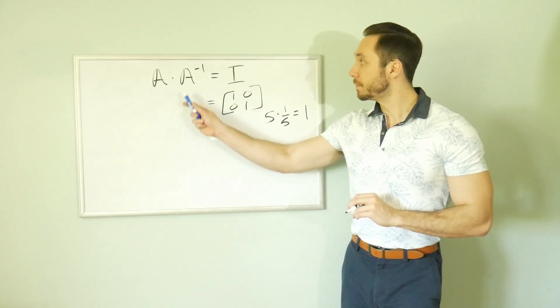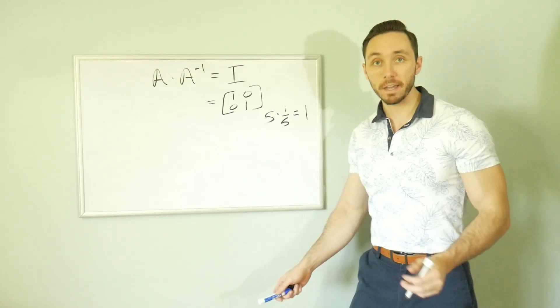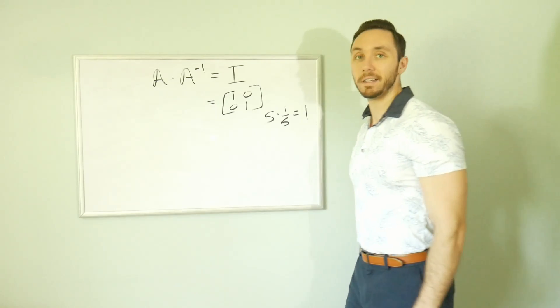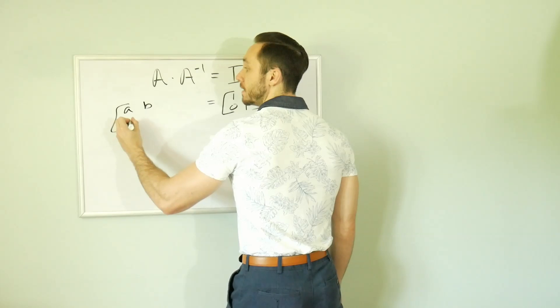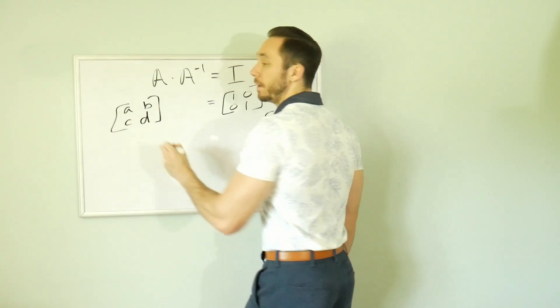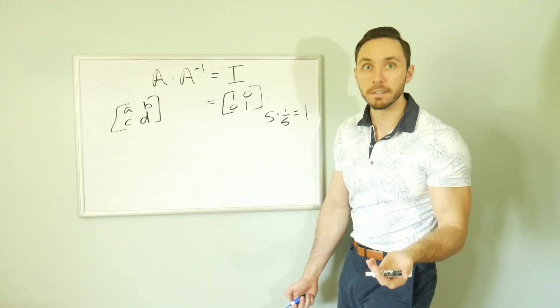This is going to help us pinpoint what A inverse really truly is. So let's just say I have this matrix A and generally speaking, its elements are, we'll call A, B, C, and D.